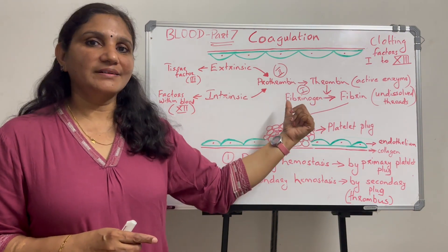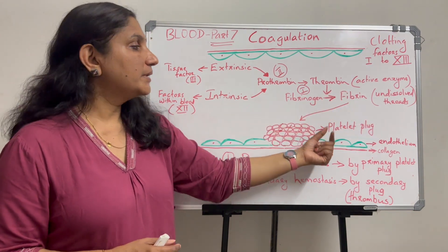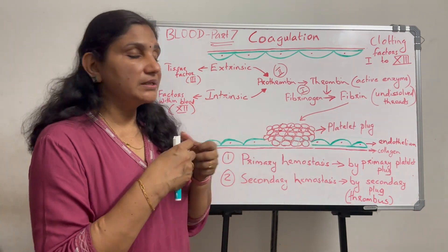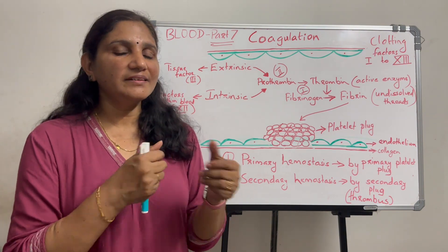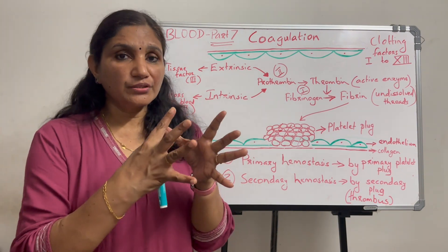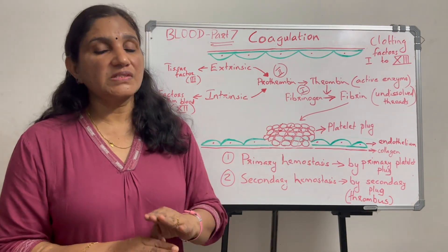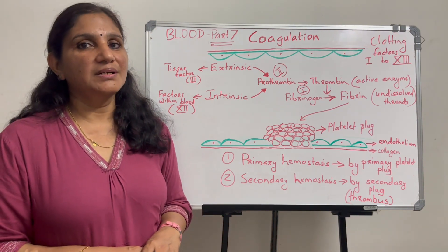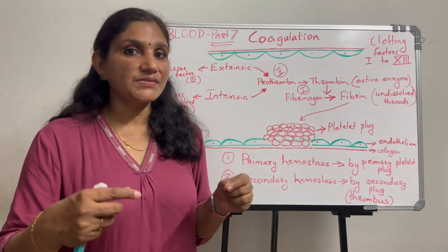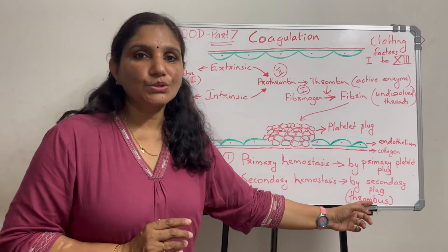In this process, the coagulation factors activate the conversion of prothrombin to thrombin and fibrinogen to fibrin. The fibrin threads then stabilize the unstable platelet plug — fibrin threads get intermingled with the aggregated platelets and red blood cells. The clot then retracts into a tight plug, permanently sealing the bleeding. This is called coagulation, and the resulting tight blood clot is called a thrombus.